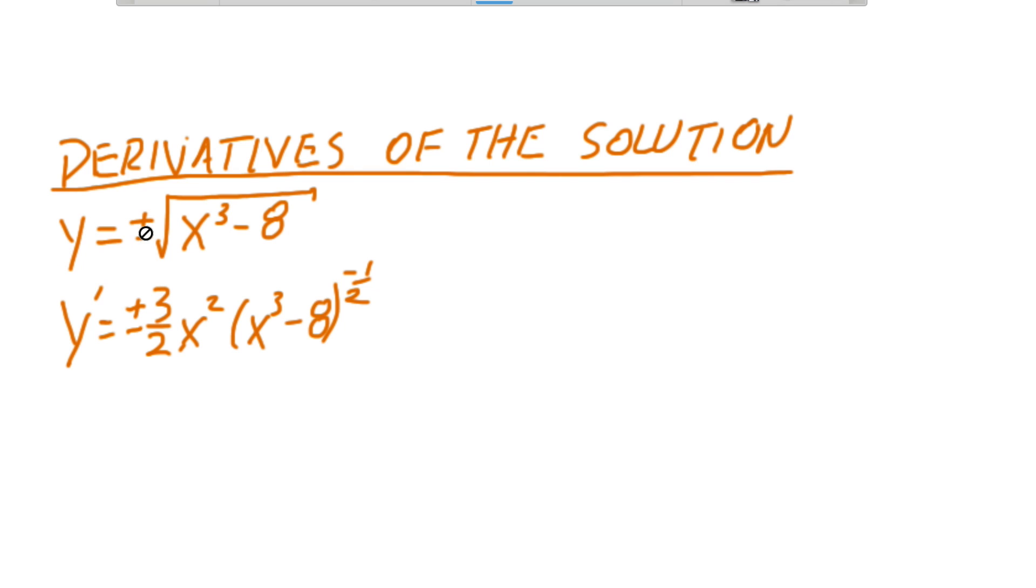Notice that the original solution, when we solve for just y, we end up with two answers. Therefore, when we take the derivative, we have two answers.